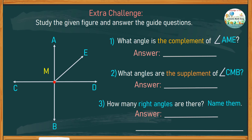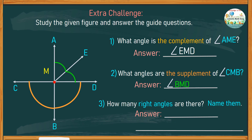For number one, just find the pair of angle AME to come up with complementary angles. The complement of angle AME is angle EMD. For number two, find which angle to pair with angle CMB to come up with 180 degrees, forming supplementary angles. Here is one of them: on this side, the supplement of angle CMB is angle BMD. Here is another one: on the vertical side, the supplement of angle CMB is angle CMA.